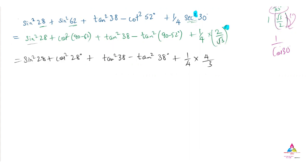So now what we have, this 4 and this 4 get cancelled, and here left is one by 3. So now what is this sine square 28 and the cos square 28?